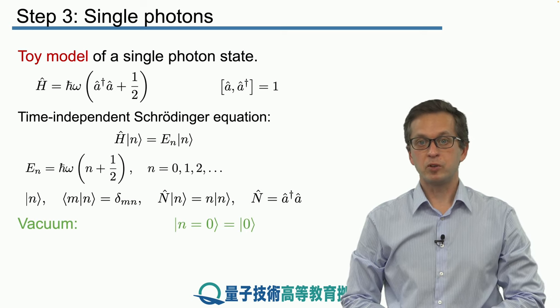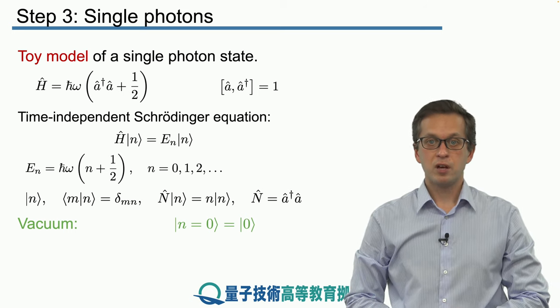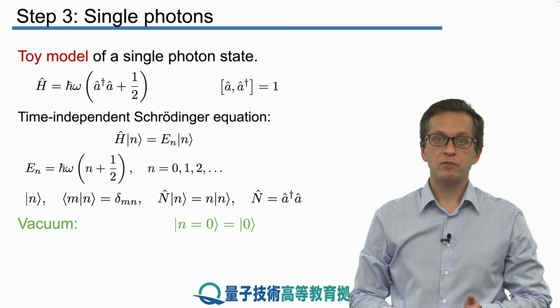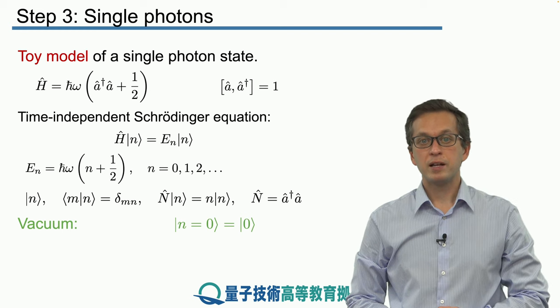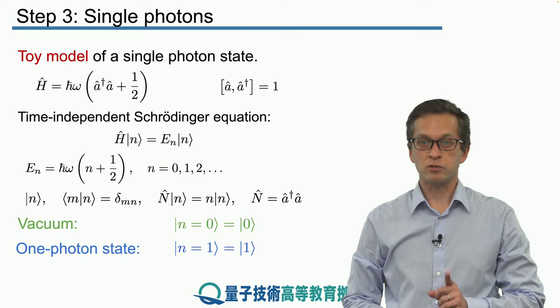And we saw in the previous step the properties of vacuum, in other words when n equals 0, so it makes sense that in this step we investigate similar properties but for a field that's prepared in the one photon state where n equals 1.